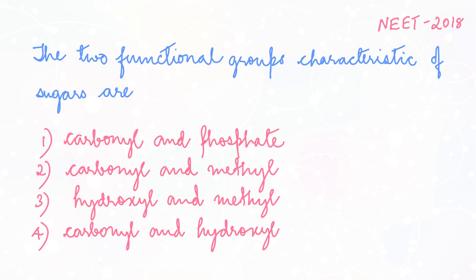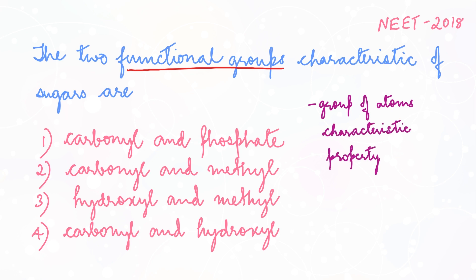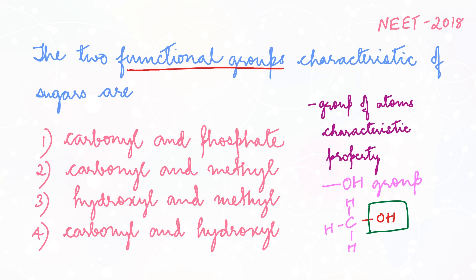To answer this question you need to know what functional groups are. A functional group is a group of atoms that gives the compound its characteristic property. For example, if an OH group is attached to a hydrocarbon it forms the simplest form of alcohol, methanol. So the OH group is the functional group here. Hydrocarbons that contain the OH group fall under the class of alcohols. So the question is: what are the functional groups that give the characteristic property to sugars?